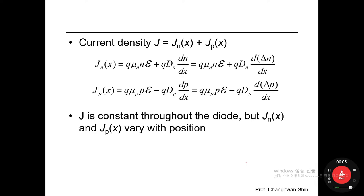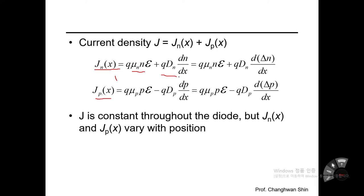Let me get back to the point of how the current density has been formed and described with a certain equation for a p-n junction diode. In the previous clip, I explained two different components for building up the current density: J sub n, the electron current density, and J sub p, the hole current density. Both consist of two different terms: the drift component and the diffusion component.